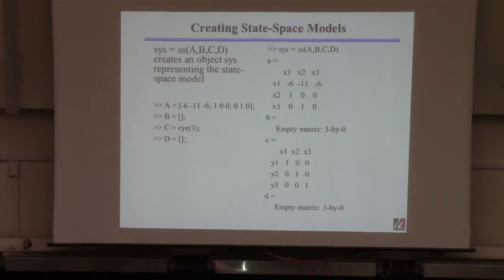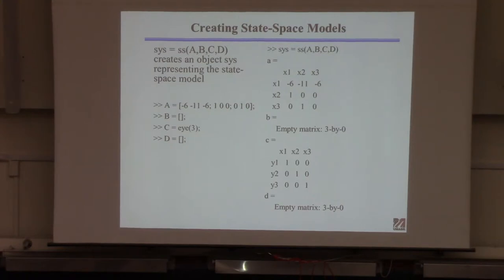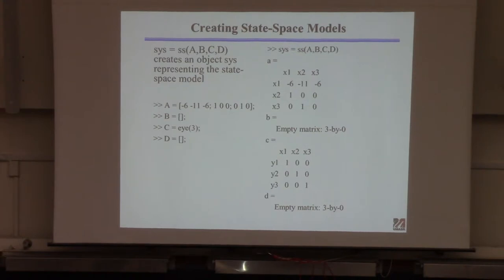To do what I described: specify A as the matrix of interest — the same three-by-three matrix. In MATLAB, set B and D to empty brackets — that means I don't have a B or a D. Set C to eye(3) — that creates a three-by-three identity matrix. Then issue the ss command. MATLAB will print out the A matrix, indicate B and D are empty, and show the identity matrix for C.